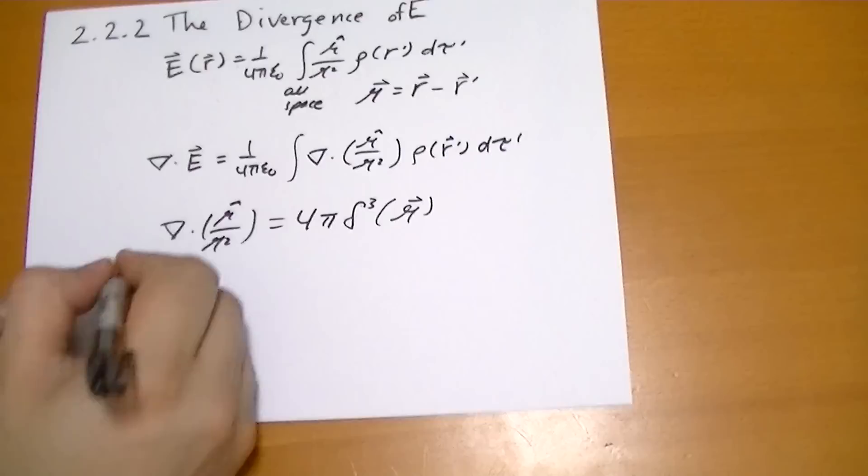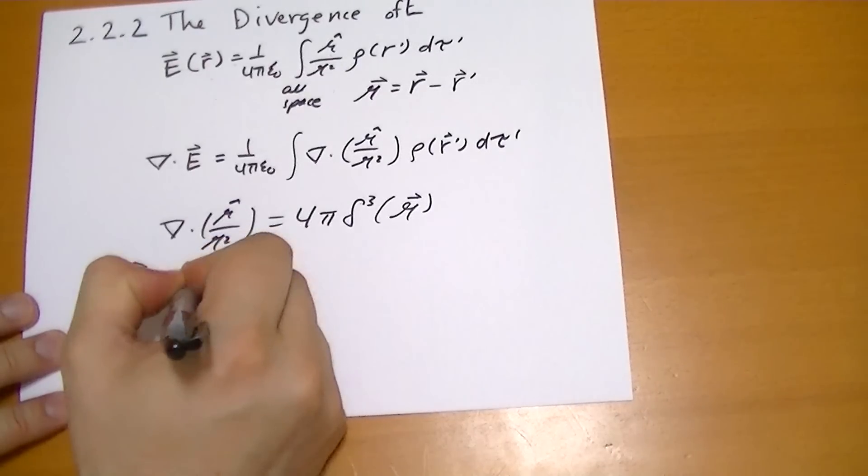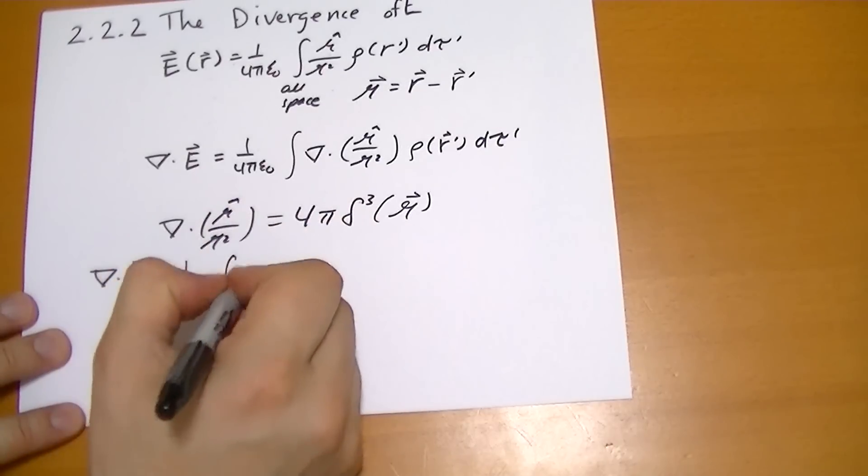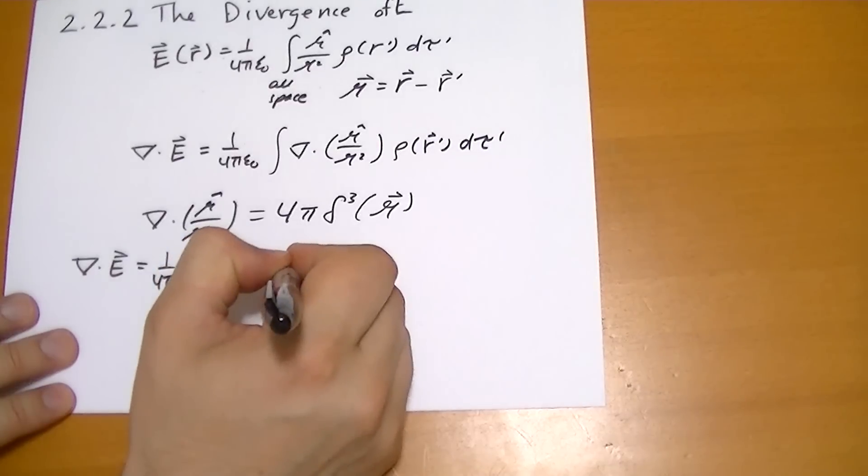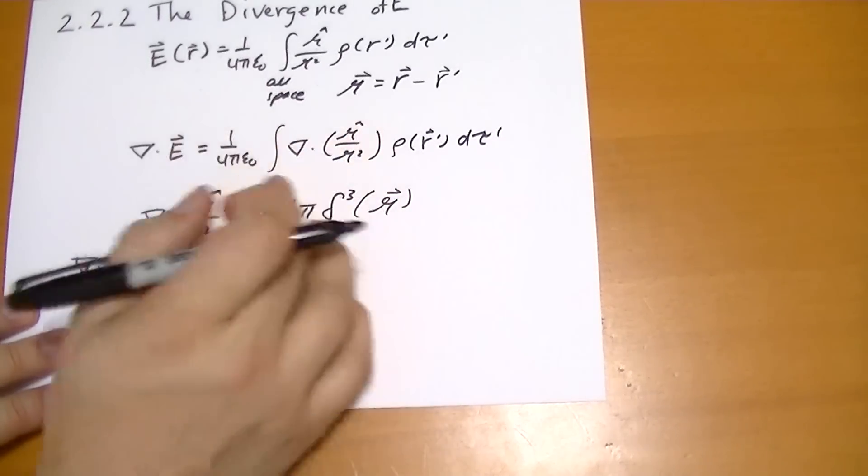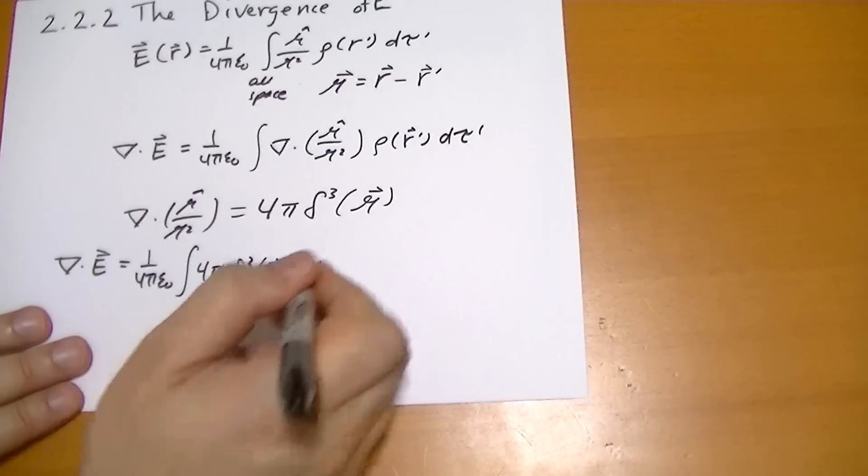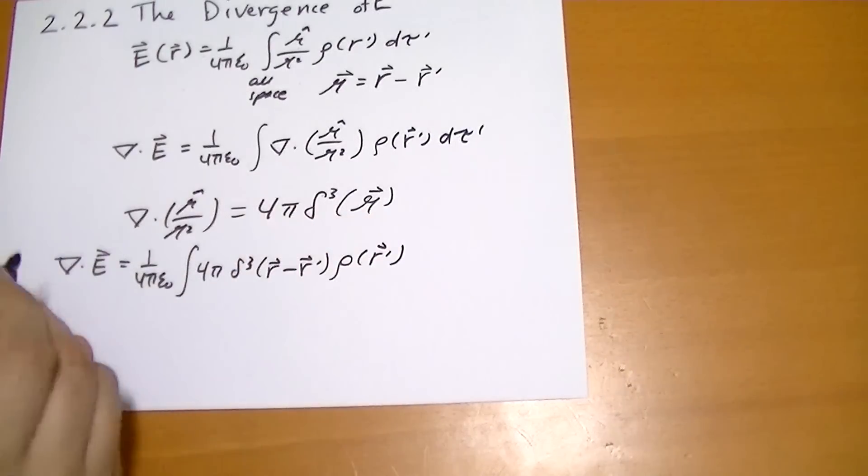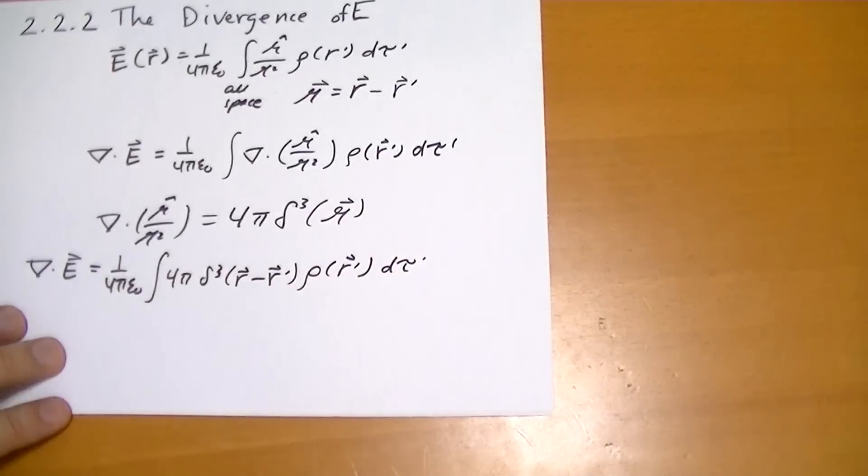So we can rewrite that all as the divergence of E is equal to 1 over 4 pi epsilon-naught times the integral of this 4 pi, the 3-dimensional Dirac-delta function. And this r is actually defined as the r-vector we're calculating for minus the r-vector of the current, the thing we're integrating over, times the charge density at r-prime and times the volume infinitesimal d tau prime.